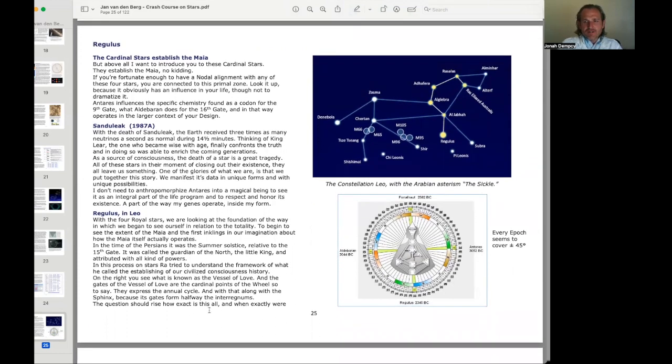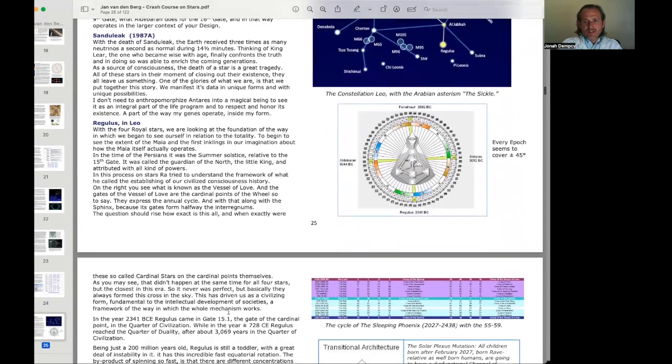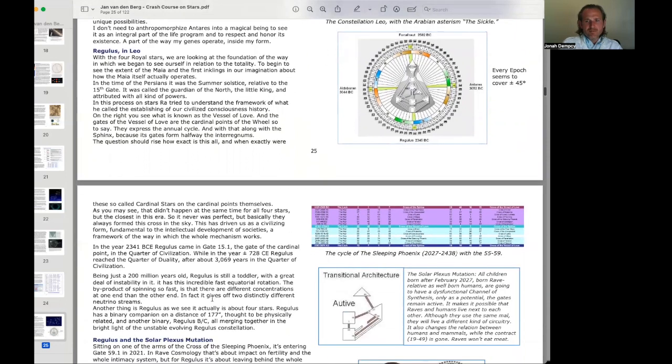The question should arise, how exact is this all? And when exactly were these so-called cardinal stars on the cardinal points themselves? As you may see, that didn't happen at the same time for all four stars. But the closest is in this era, so it was never perfect, but basically they always formed a cross in the sky. This has driven us as a civilizing form.